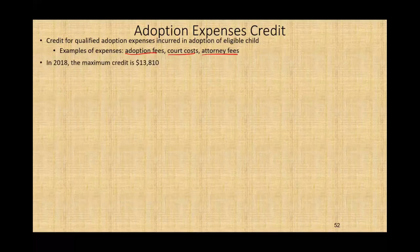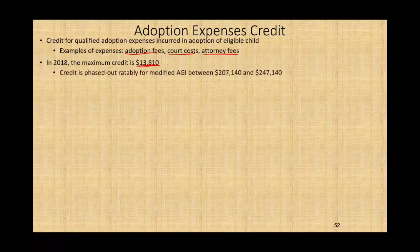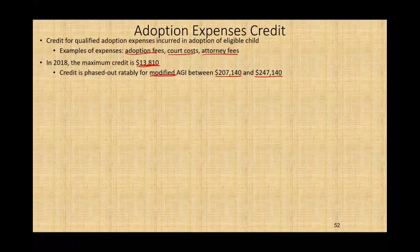In 2018, the maximum credit is $13,810. The credit is phased out for modified adjusted gross income from $207,140 to $247,140. When we say modified, I just refer to adjusted gross income because the modifications may add or subtract certain income from AGI, but it's a long list that doesn't apply to most situations — that's why I skip over that modified portion. If you're interested, look in the IRS materials or your book.